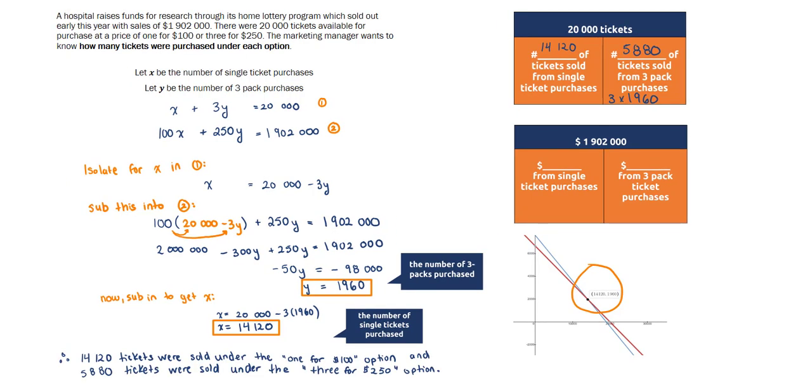So now we've answered the question that was asked: how many tickets were purchased under each option. 14,120 tickets were sold under the single ticket or one for $100 option, and 5,880 tickets were sold under the three for $250 option. Thank you.